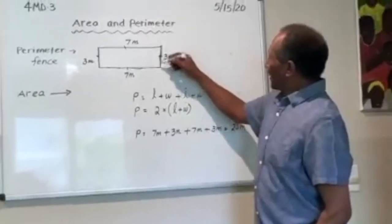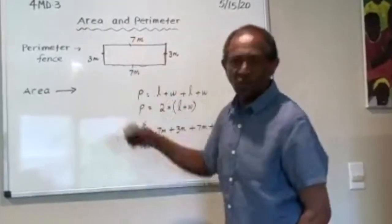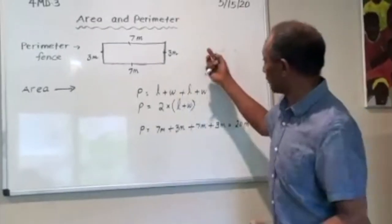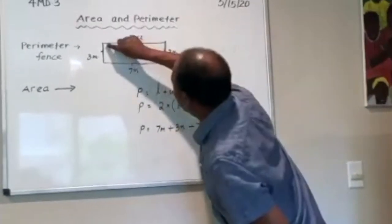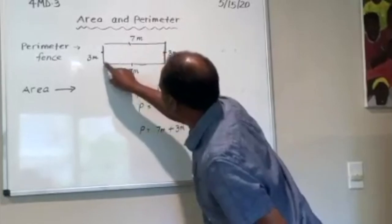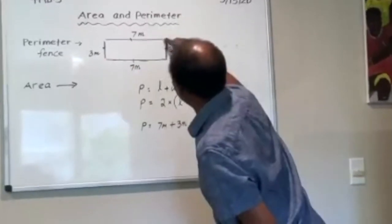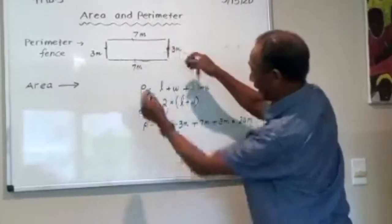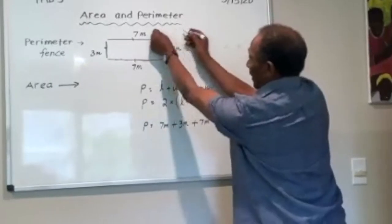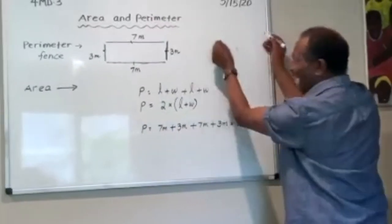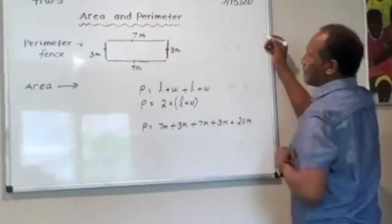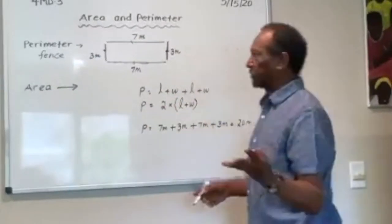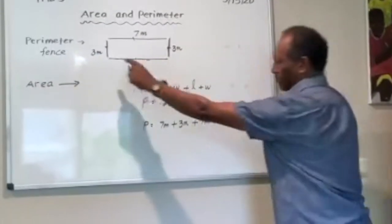That equals ten plus ten, which is 20 meters. So perimeter is one-dimensional. If I break these corners and put these four line segments next to each other and measure the distance, that equals the perimeter.